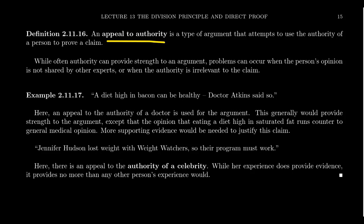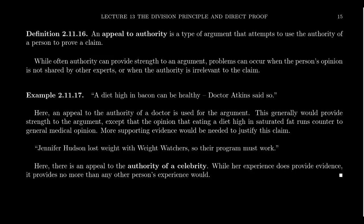This example with Jane and the whales leads into another type of logical fallacy: an appeal to authority. This is a type of argument that attempts to use the authority of a person to prove a claim — using the expertise or position of a person to argue why they are right or wrong. Earlier, we mentioned Jane was incompetent because she was only a second grader, so she lacked authority and her argument was dismissed, even though she was actually right.